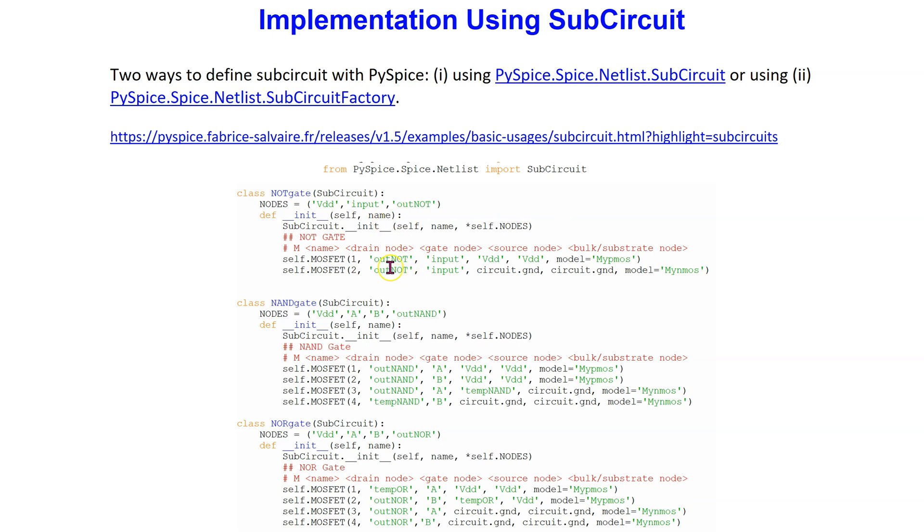The sub-circuit syntax is shown here. We give each sub-circuit a name and define its connection nodes. These two lines initialize the sub-circuit. The NOT gate is defined here where we have just changed circuit.mosfet to self.mosfet and adjusted the node names accordingly. Similarly, this is showing the sub-circuit implementation for NAND and NOR gates. Please pause the video now if you wish to study the syntax in more detail.